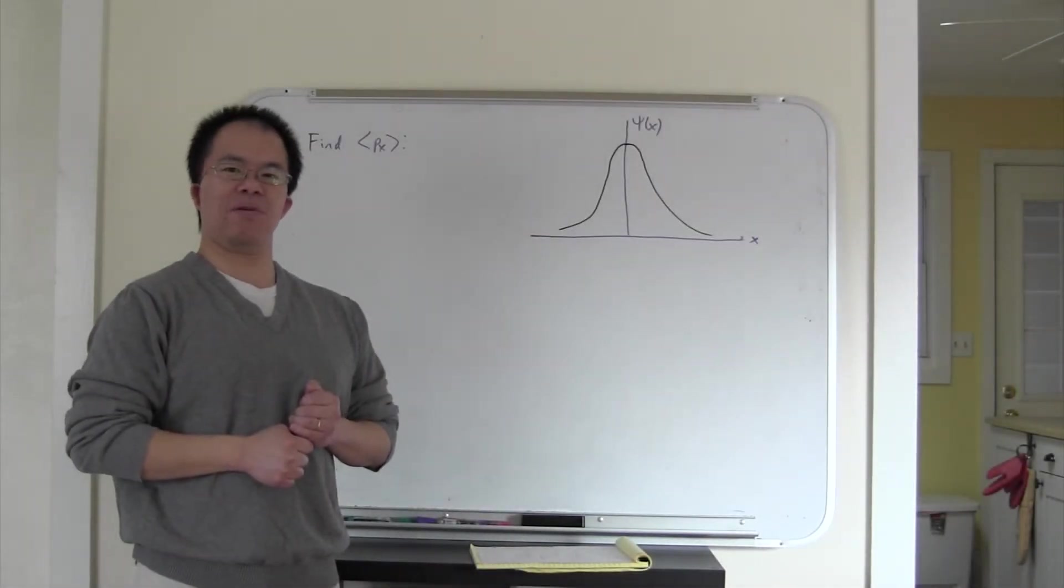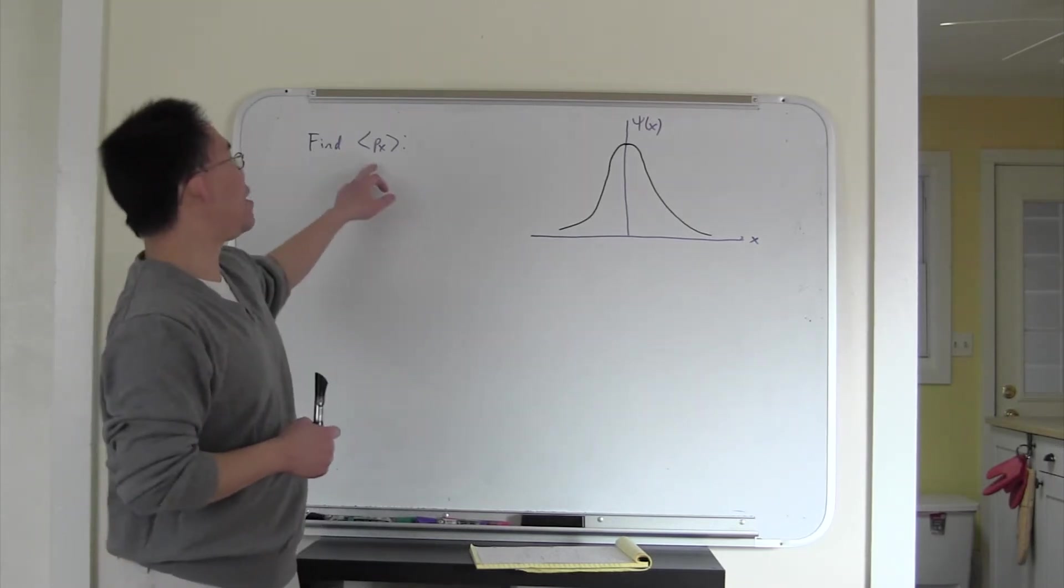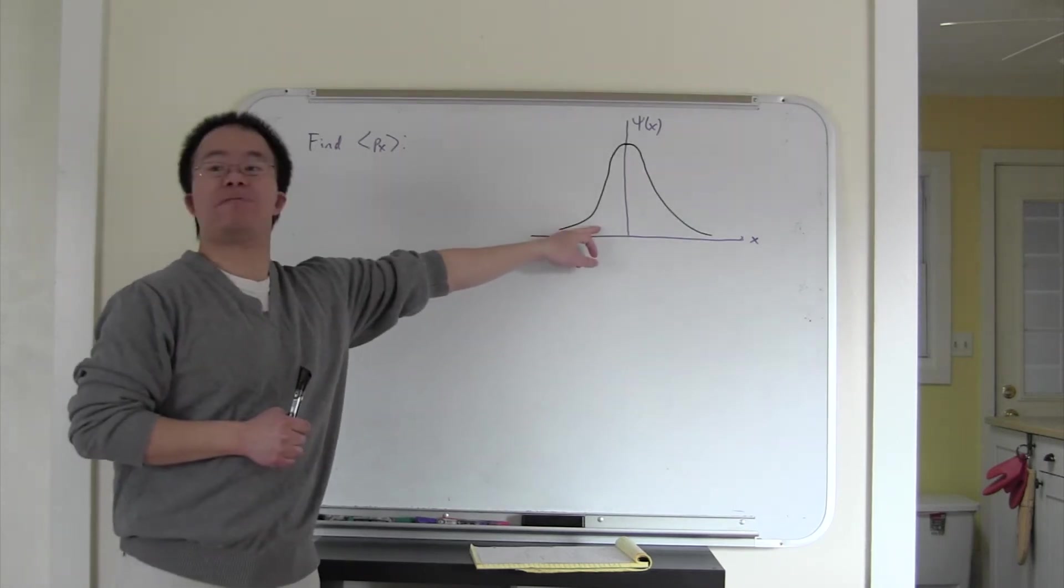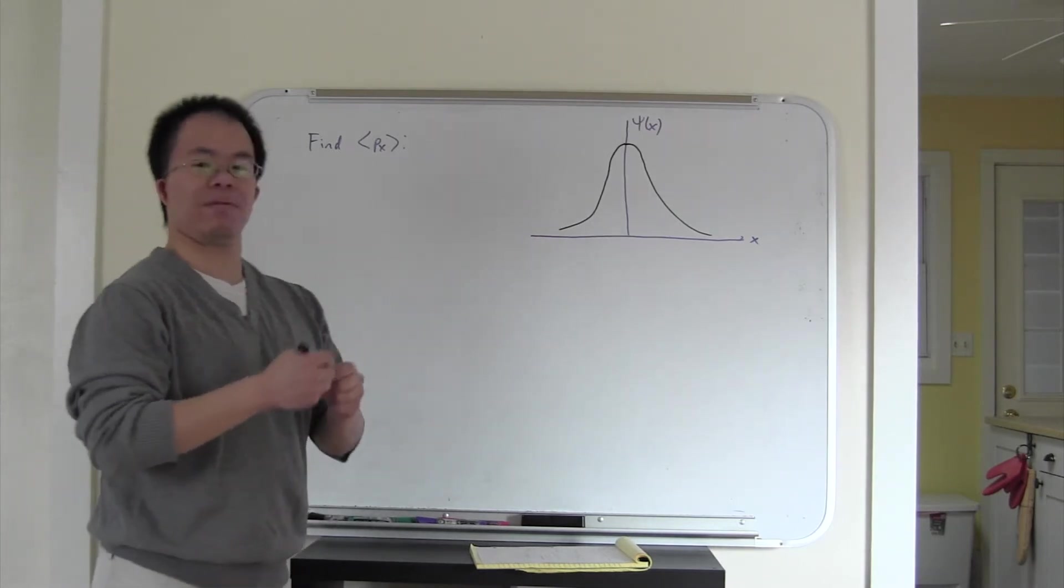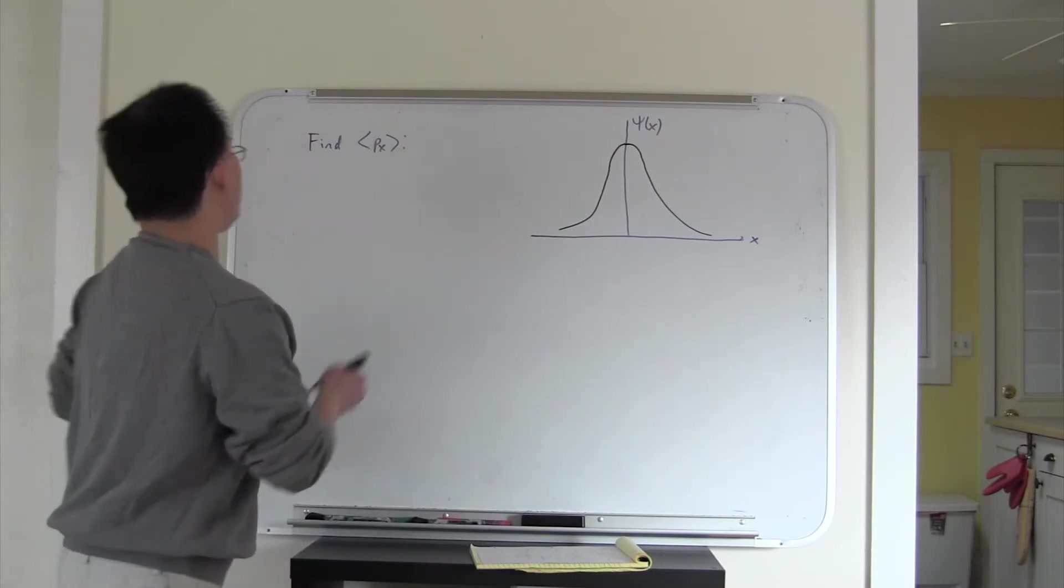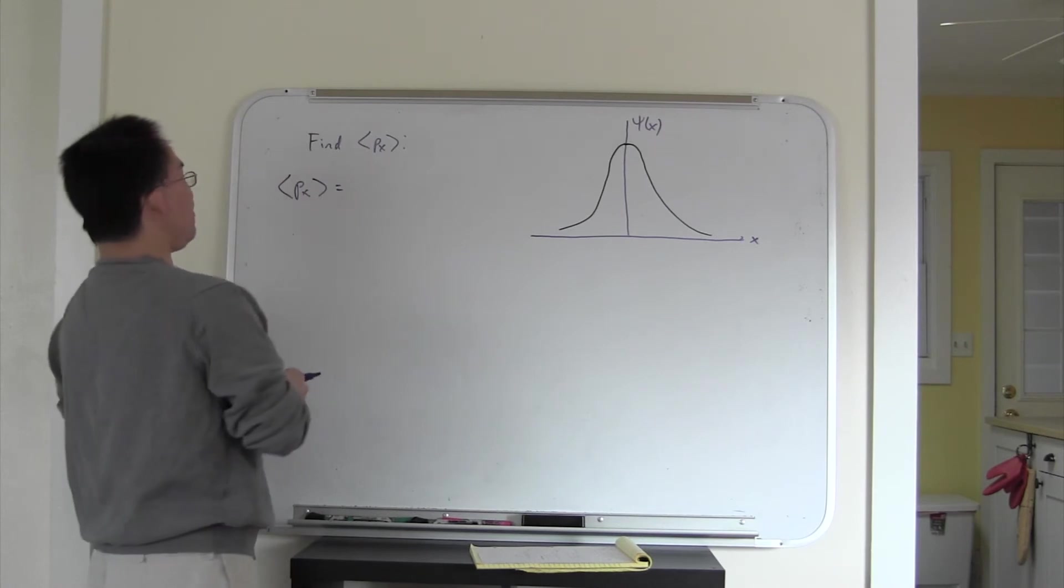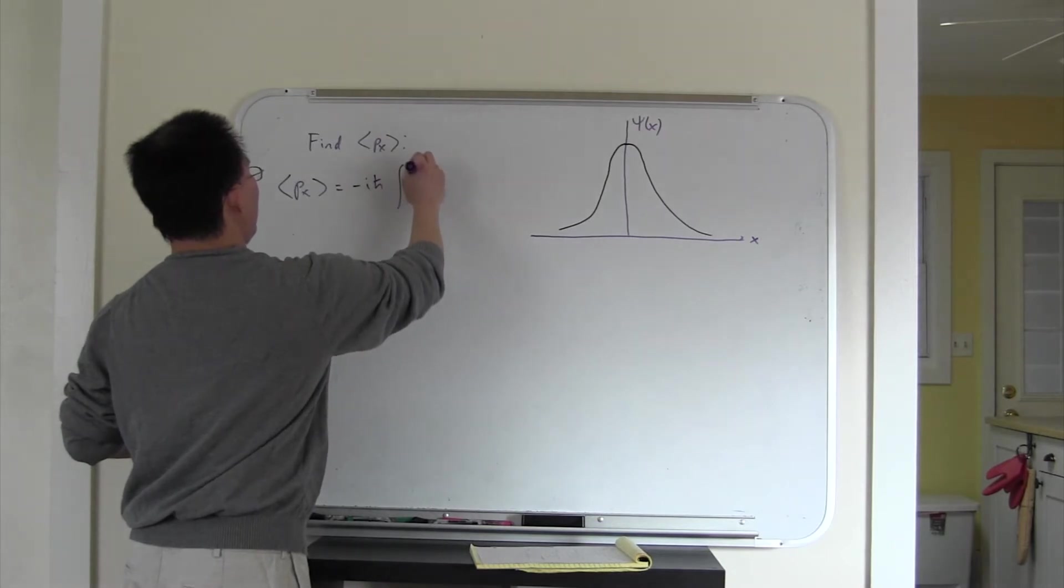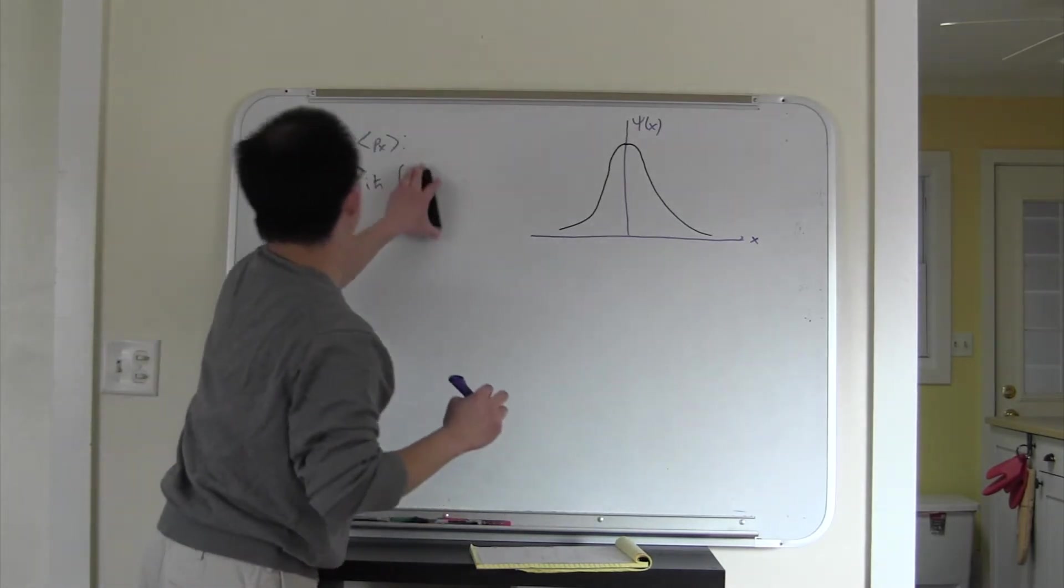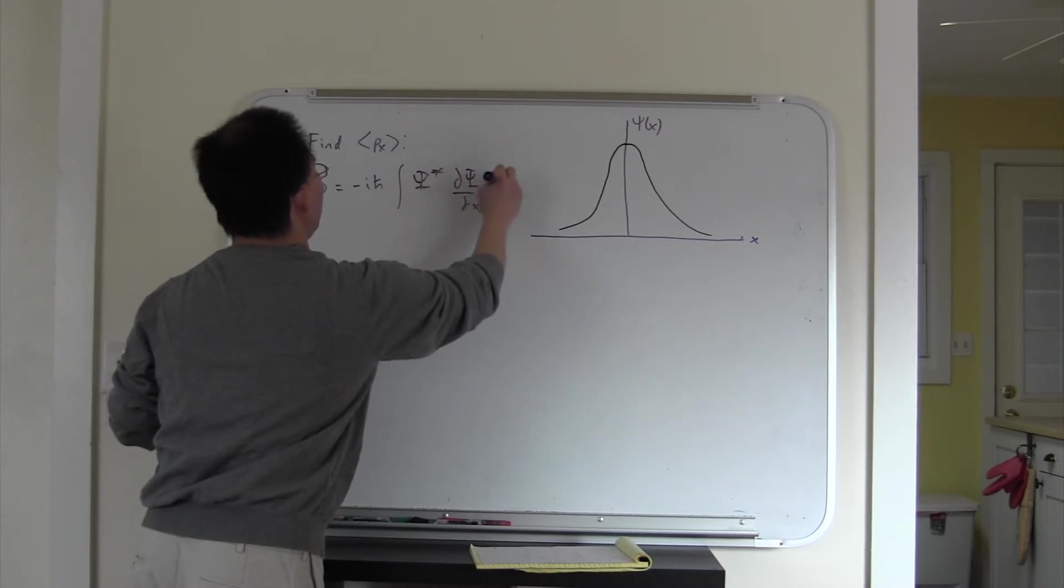Okay. So this question asks us to think about the expectation value of momentum for this purely real wave function over here. Let's just remind ourselves of what we need to find. We need to find expectation value equals minus i h-bar integral psi-star d psi dx dx.